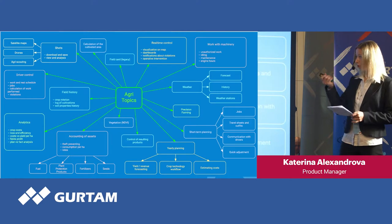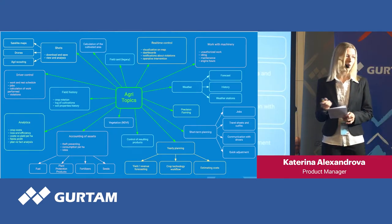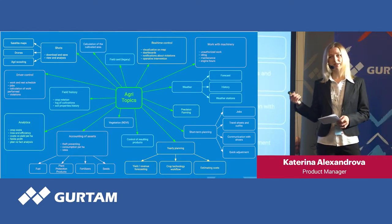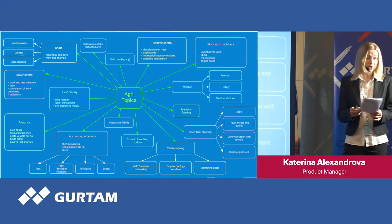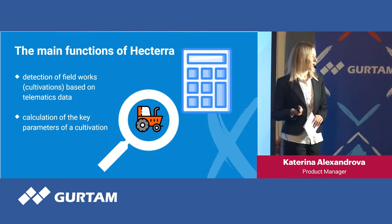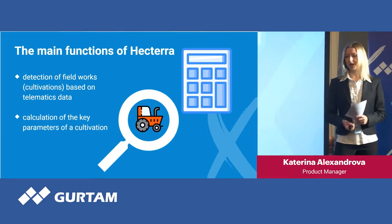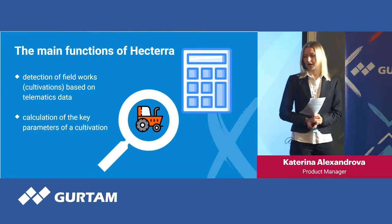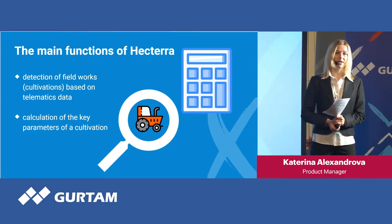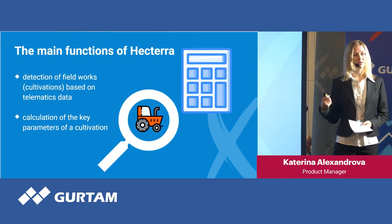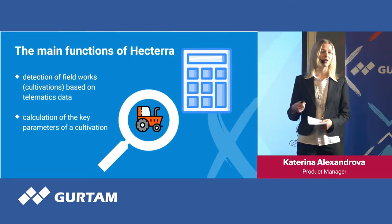Among those topics, we chose one component which lies at the center of Hectera and forms its core, to which all functionality — present or future — will be linked. The main functions of Hectera are detection of field works or cultivations based on telematics data, and the calculation of the key parameters of the cultivation. In this detection, we use unit messages and how they get into geofences or fields. Behind all this lie rather tricky, sophisticated algorithms to do this job.